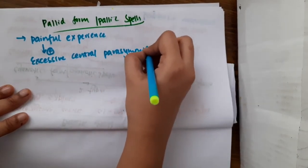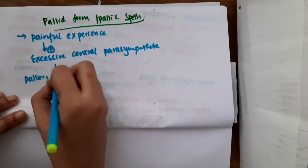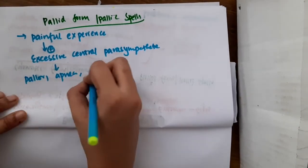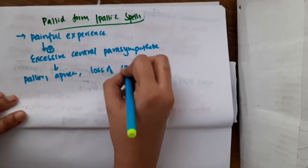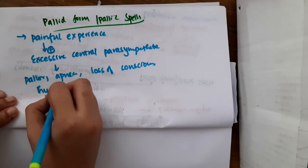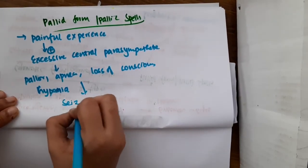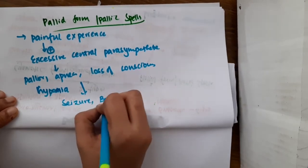So this parasympathetic activity will cause pallor, it will cause apnea, loss of consciousness, there will be hypotonia and these can also lead to seizure in the baby and bradycardia can also be there.